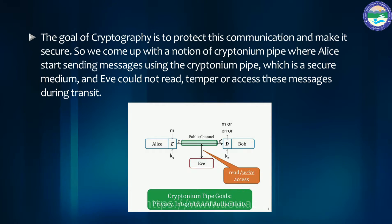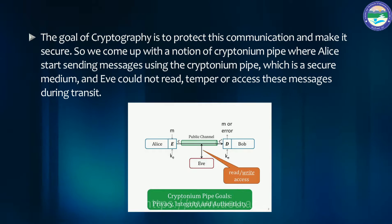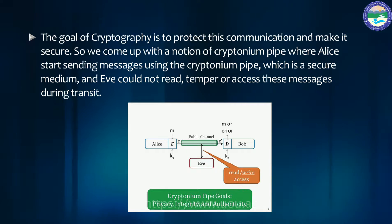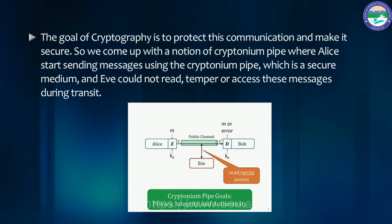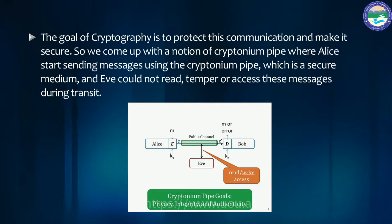We come up with the notion of a cryptonium pipe where Alice starts sending messages using the cryptonium pipe, which is a secure medium, and Eve could not read, tamper, or access these messages during transit. We define cryptology as a practice and study of techniques for securing communication and data in the presence of adversities.